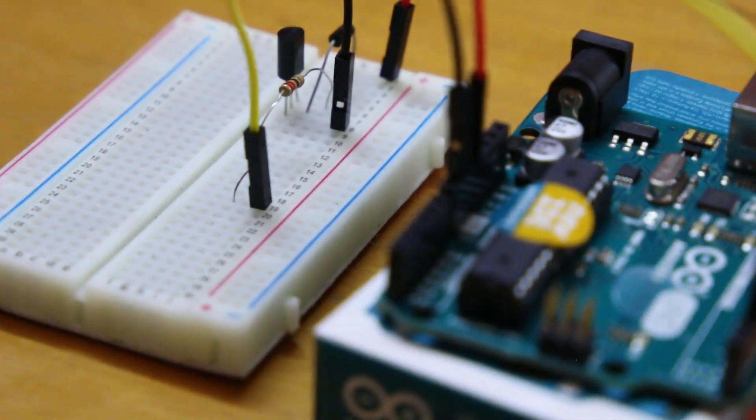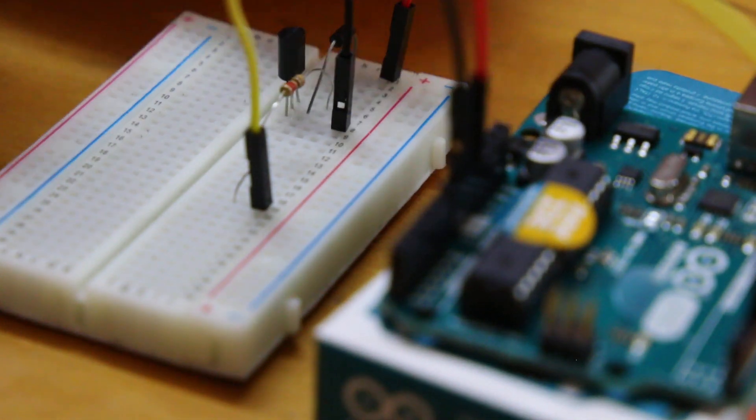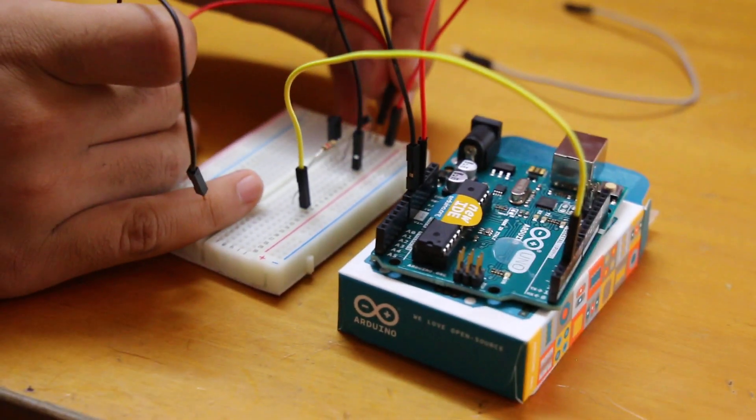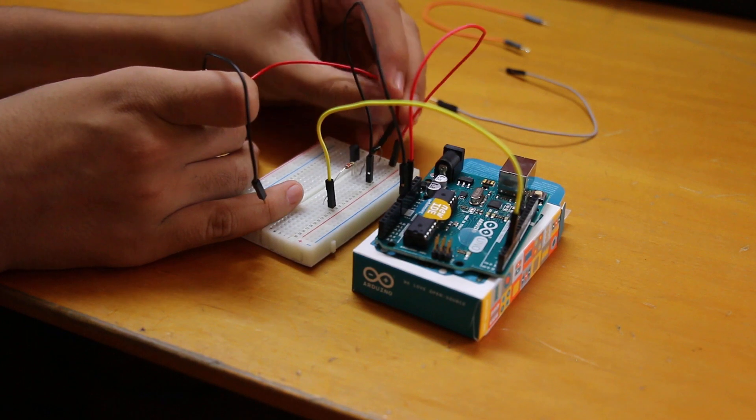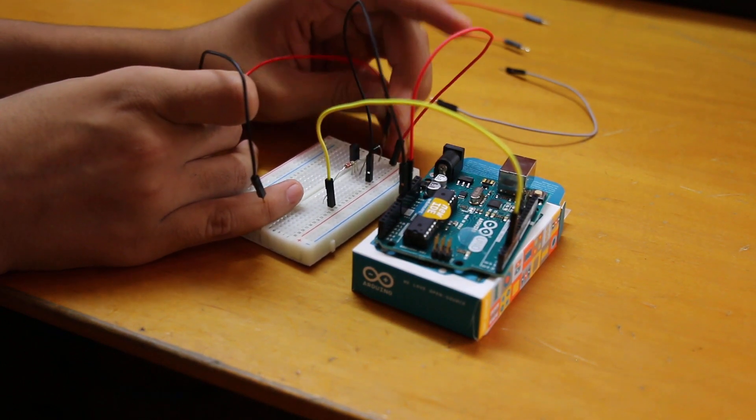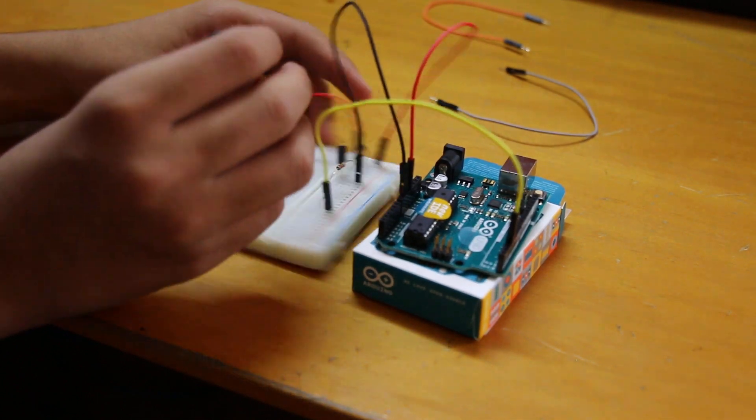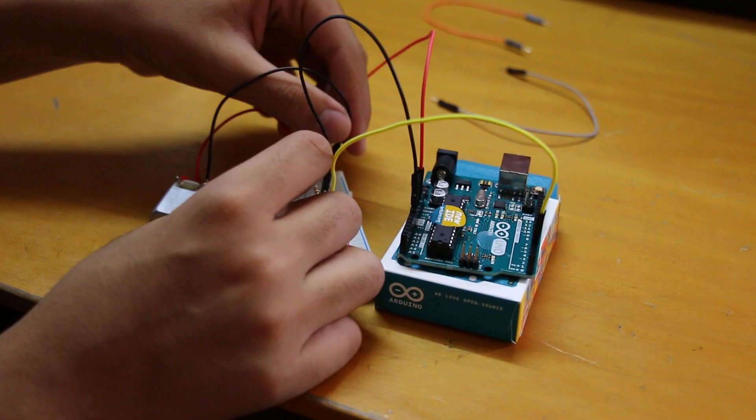Now all we have to do is connect the motor. So to complete this off, we're going to put the motor, the positive, it doesn't matter, one of the pins over here with the 5V. And another is going to be the ground, or the other one, which is going to be connected with the collector.